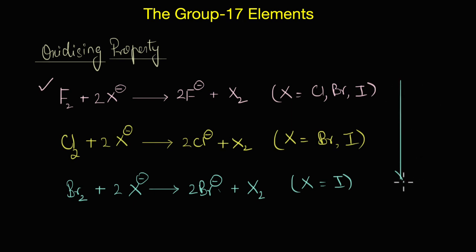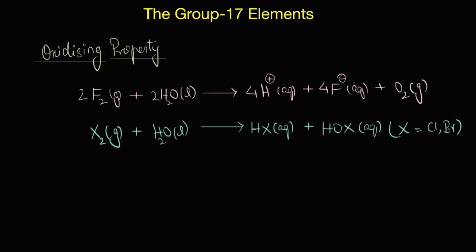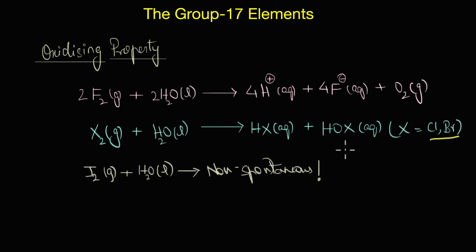Clearly, we can see that the oxidizing nature, or the strength of oxidizing power, decreases as we go down the group. We can also understand the decreasing oxidizing ability by looking at the reaction of these halogens with water. For instance, in the reaction of fluorine with water - if you replace fluorine with chlorine or bromine, they react with water to form the corresponding hydrohalic and hypohalic acids. On the other extreme, the reaction of iodine with water is completely non-spontaneous, again showing how oxidizing power decreases as we go down the group.